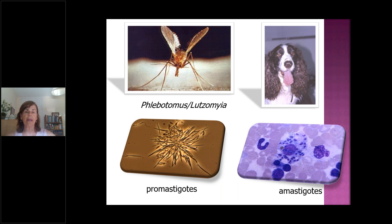You know very well that Leishmania is a protozoan that has two different stages. One is in the vector, called promastigotes, which move with flagella and are found in the midgut of phlebotomus — the main vectors — these phlebotomine sandflies, phlebotomus in the old world and lutzomyia in the new world.